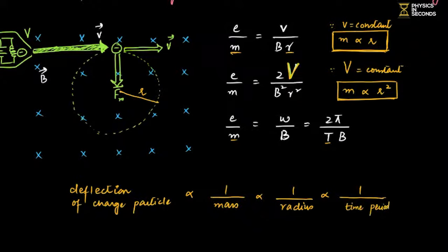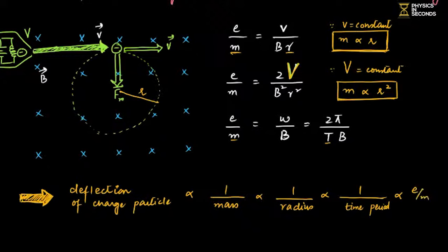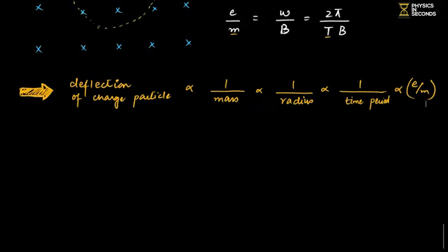Finally, Charge to Mass Ratio and deflection have a direct relation: the particle with greater Charge to Mass Ratio deflects more. The electron deflects the most and also has the highest Specific Charge. You must remember these relations: Charge to Mass Ratio with radius, with time period — all can be seen from here.